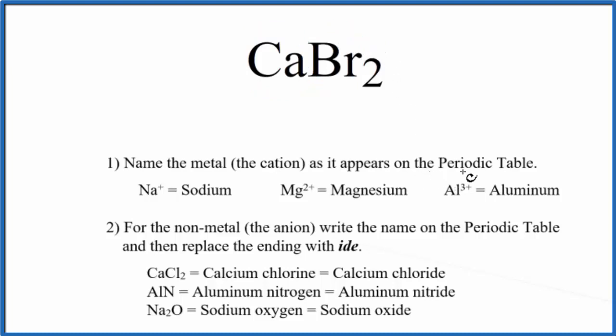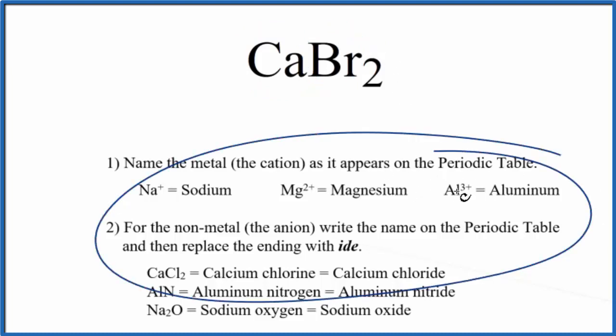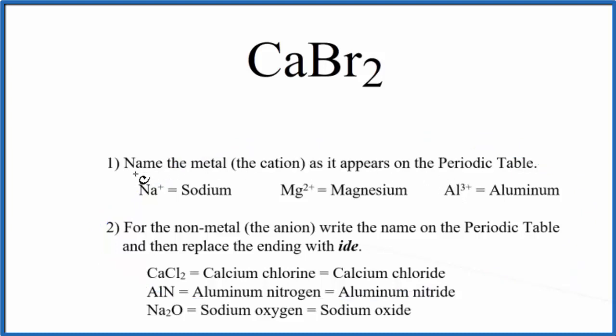When we have a binary ionic compound, we use these rules to write the name. First, we write the name for the metal, that's the Ca, just as it appears on the periodic table. So Ca, that's calcium.